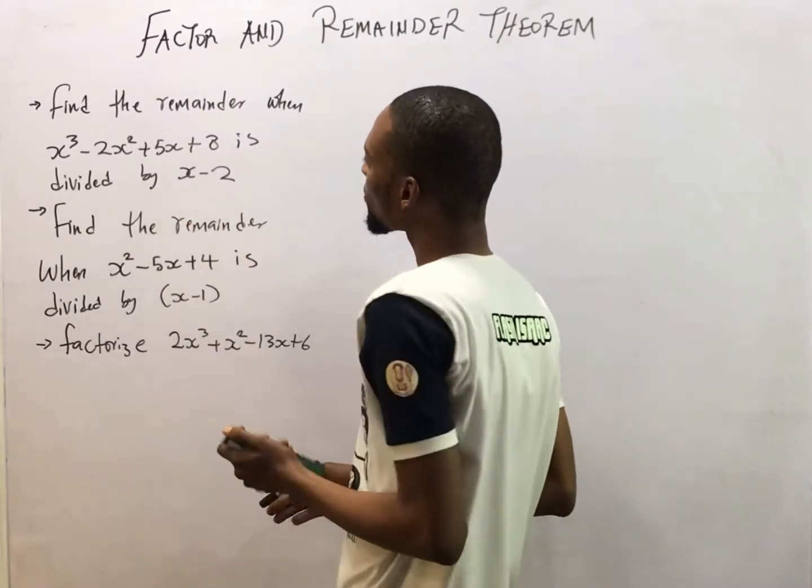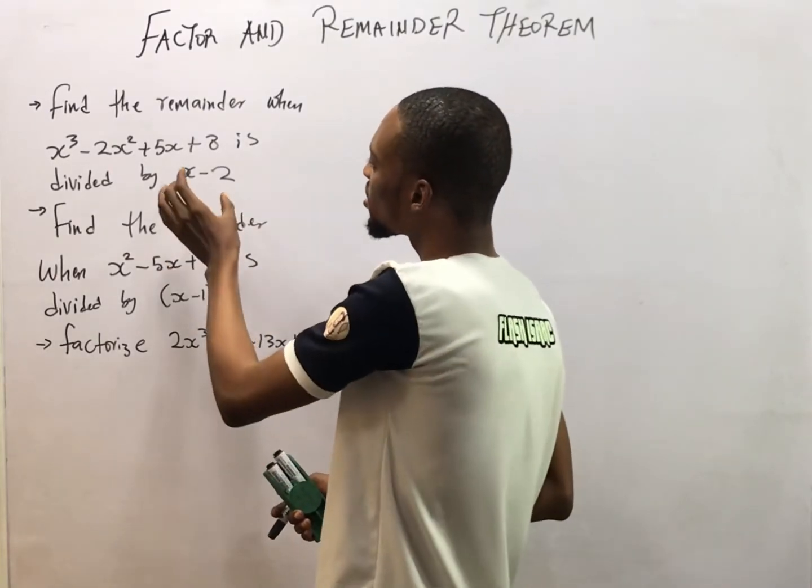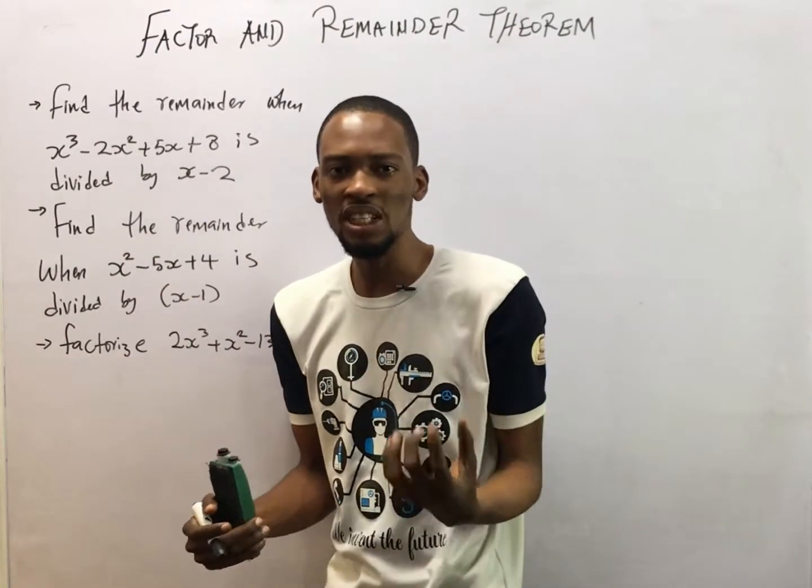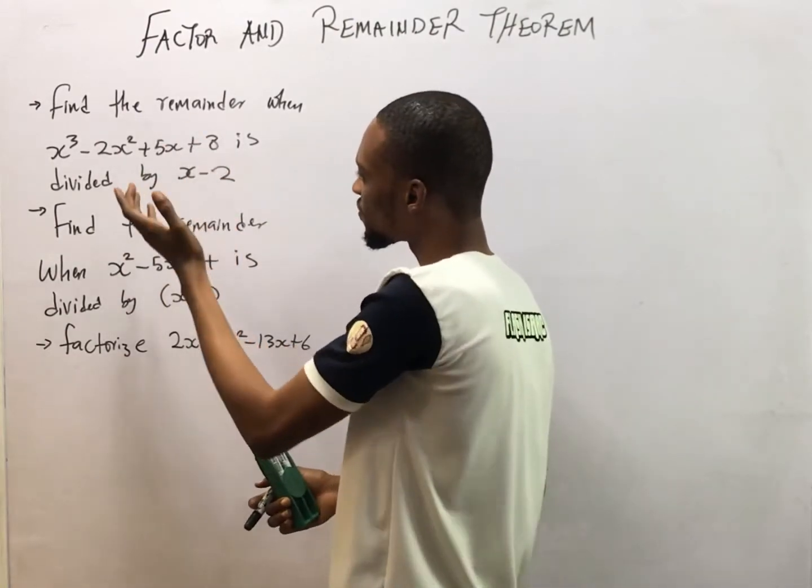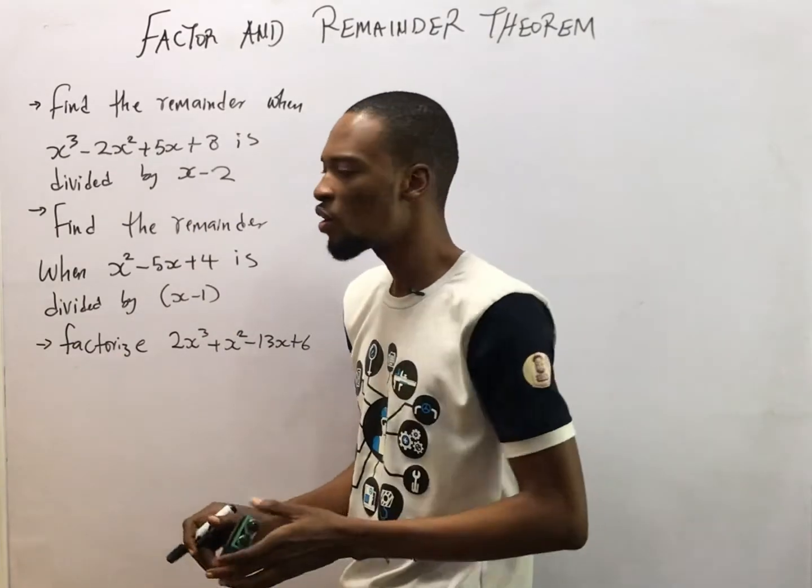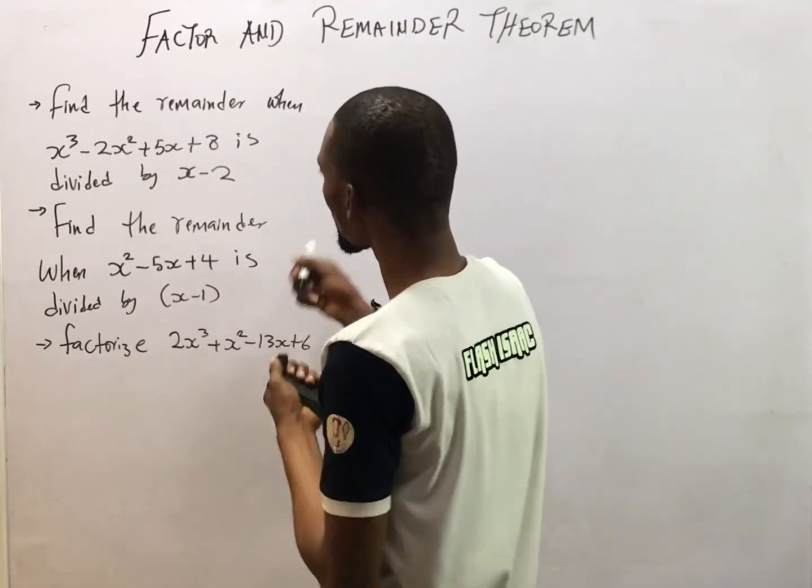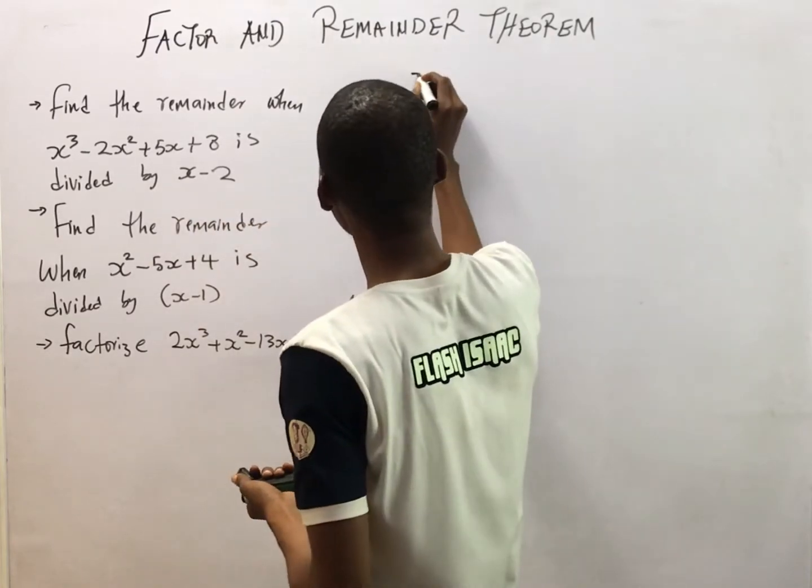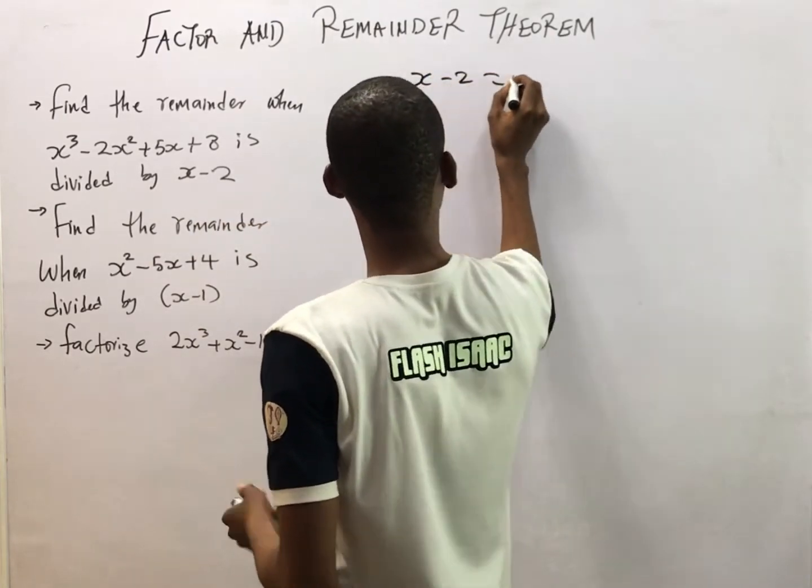To get that, we don't need to start solving using long division method to get the remainder. Solving this using long division is not necessary yet. What you do is simply, let's say S is divided by S minus 2. So simply say S minus 2 is equal to 0.